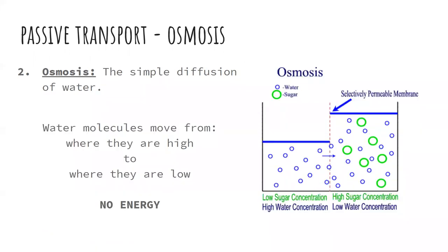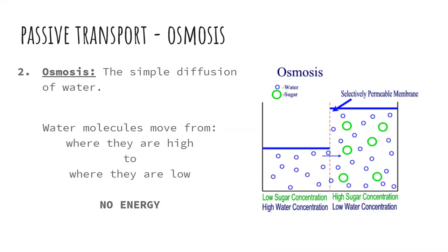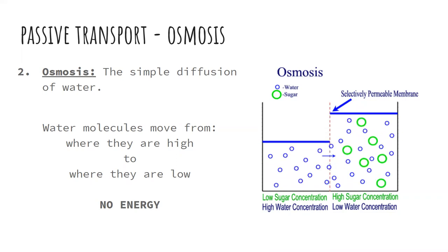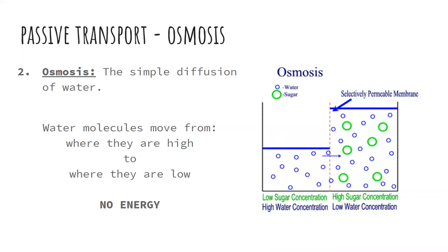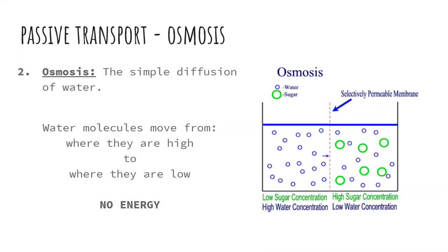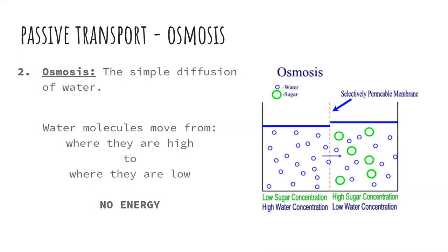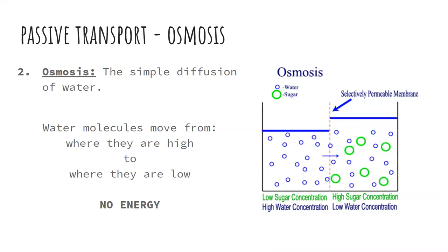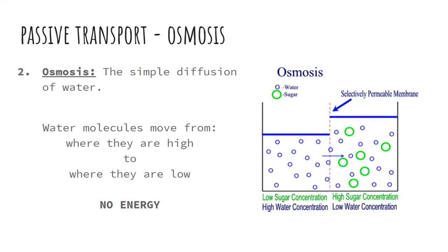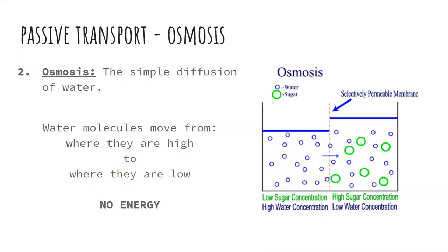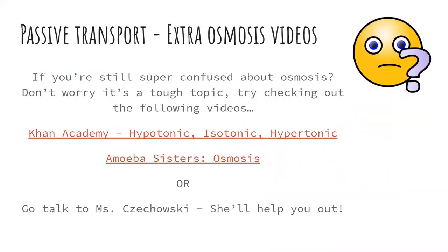Osmosis is the movement of water — not particles, not sugar or salt, but water. In osmosis, water molecules move from an area where there's a high concentration of water to an area where there's a low concentration of water. We will go over osmosis in depth in the coming days, but osmosis is a form of passive transport so it requires no energy. Remember, our whole point of transport is to maintain homeostasis — an internal balance.